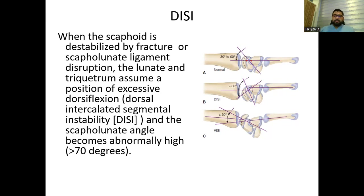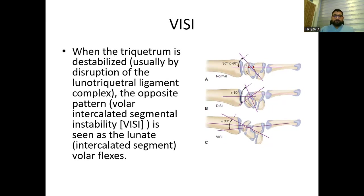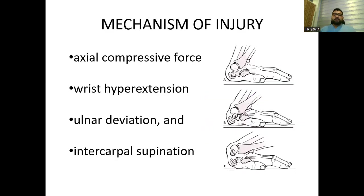In DISI, there is disruption of the scapholunate ligament and the scapholunate angle becomes abnormally high. The opposite is volar intercalated segmental instability (VISI): when the triquetrum is destabilized, usually by destruction of the lunotriquetral ligament, the lunate volarly flexes and the angle becomes less than 30 degrees. The mechanism of injury is typically axial compressive forces, wrist hyperextension with ulnar deviation, and intercarpal supination.